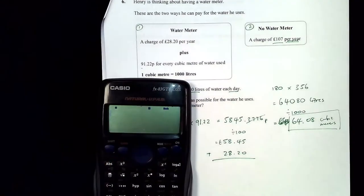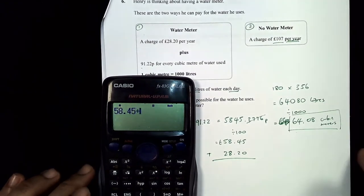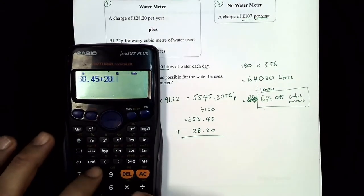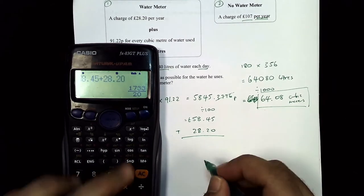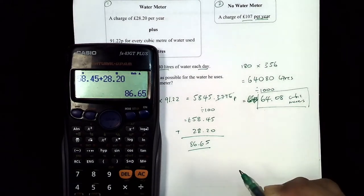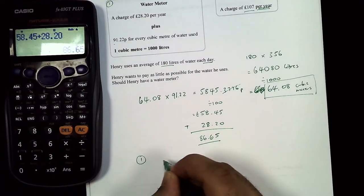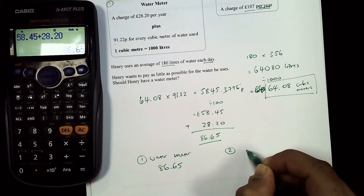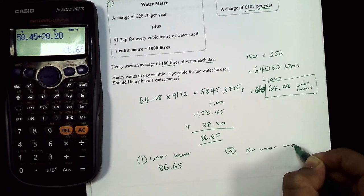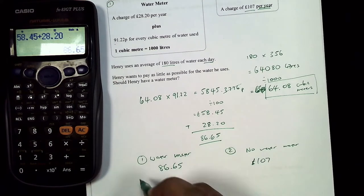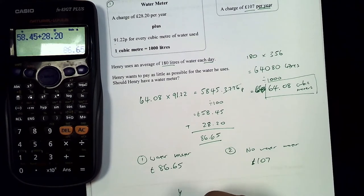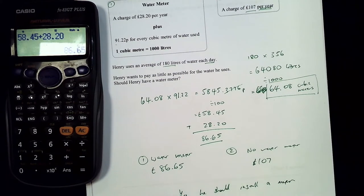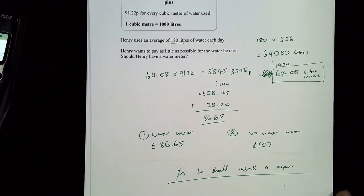Adding the fixed charge: £58.45 + £28.20 = £86.65 total for the water meter option. Comparing: water meter = £86.65, no water meter = £107. Should he have a water meter? Yes — he should install a meter, as it saves him money.